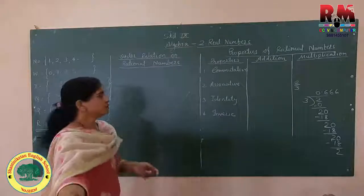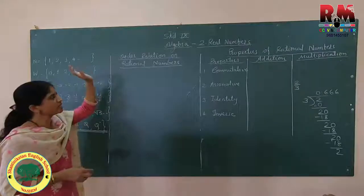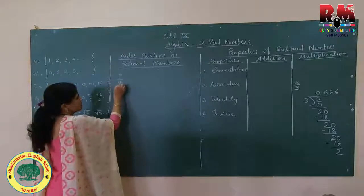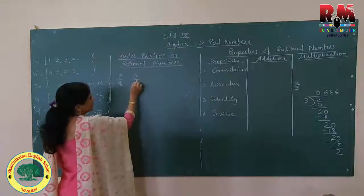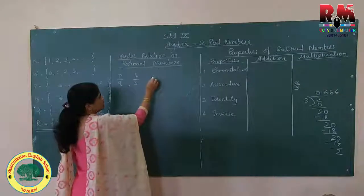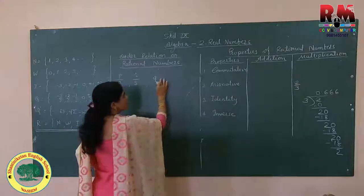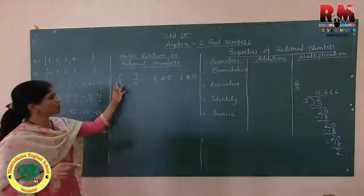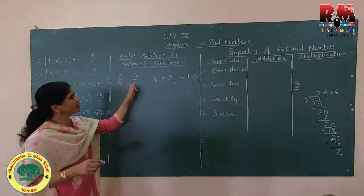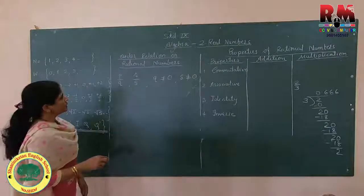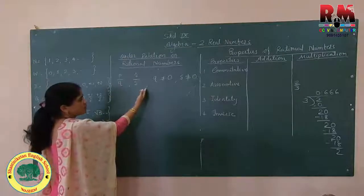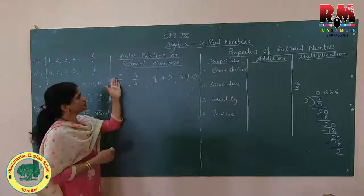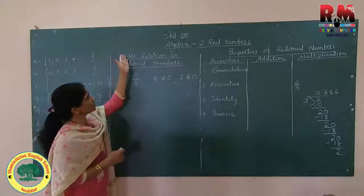Next topic in real numbers is order relation on rational numbers. We have seen what rational numbers are — numbers in P by Q form. If we have two rational numbers P upon Q and R upon S, where Q should not equal 0 and S should not equal 0, order relation means finding which rational number is greater, which is smaller, and if they are equal.